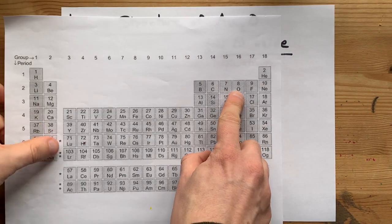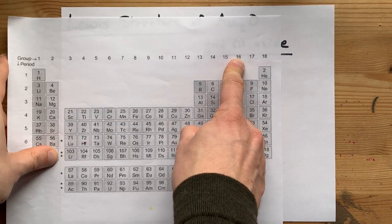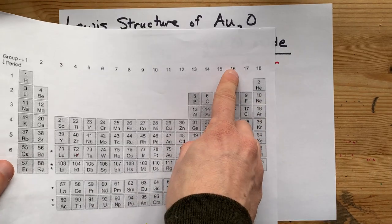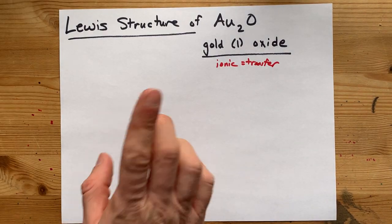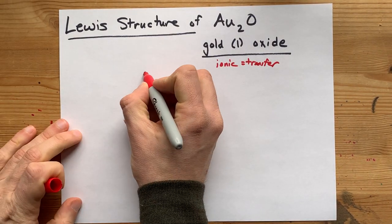Oxygen is a non-metal in group 16, which means it brings six valence electrons with it. I'm going to draw that now.